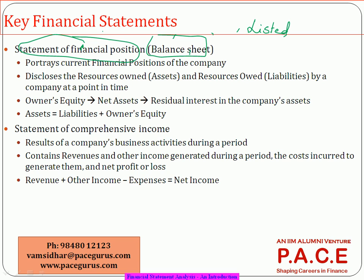What comes to the company, what is still pending to come to the company, what the company is pending to pay to other parties — what is pending to and fro from the company — that is what is an indicator of the financial position of the company. One more statement which companies have to publish is the statement of comprehensive income, which in day-to-day parlance is also called the P&L statement — profit and loss statement — or sometimes also called the income statement. All are the same names.